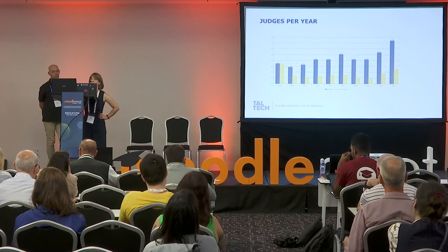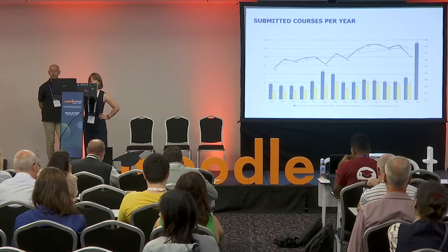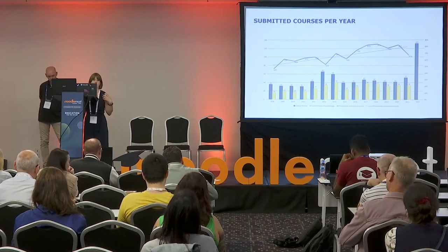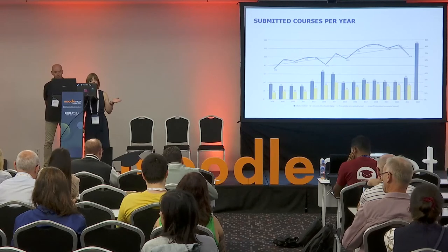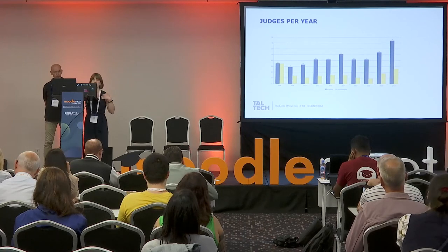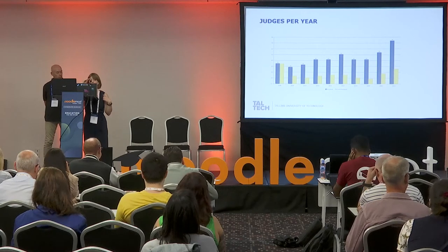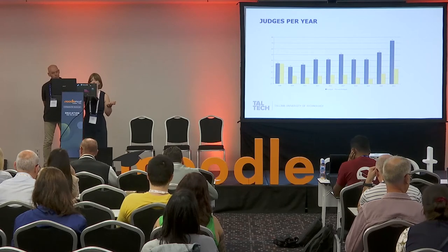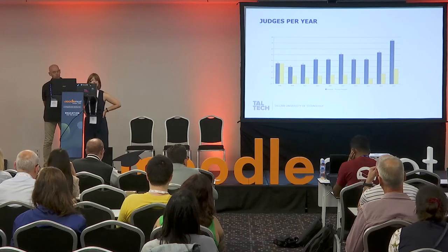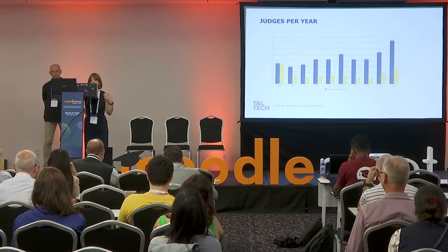The blue on the chart represents submitted courses, yellow shows how many courses got the label — not every submitted course gets the label. The green shows how many judges we had per year. This year we had more than 74 judges because of so many new courses. Yellow also shows how many new judges came, because every year we have more and more courses and need to invite more judges.